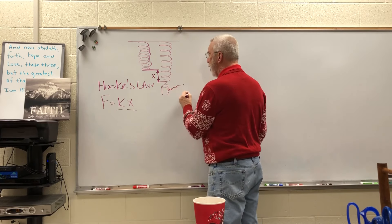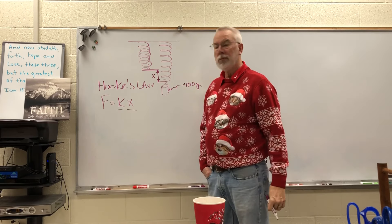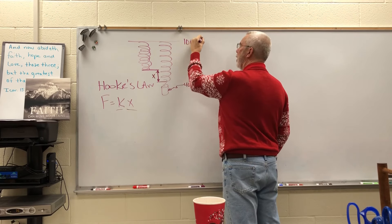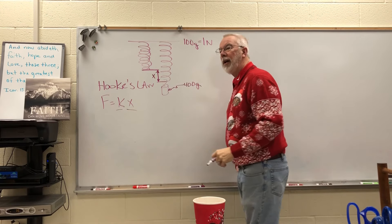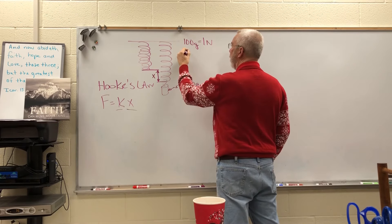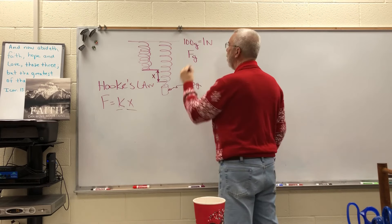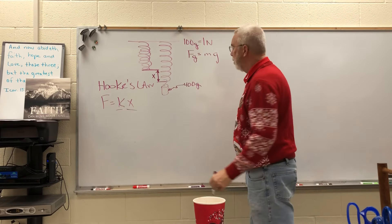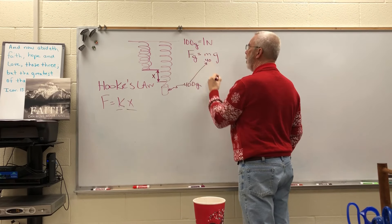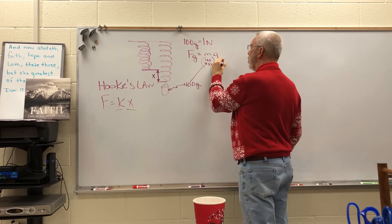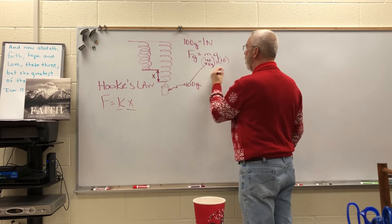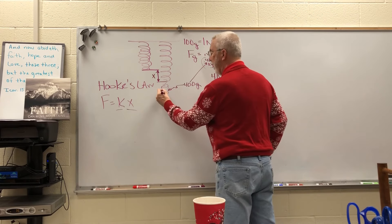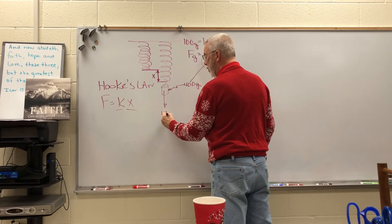If we say that this weight is 400 grams, one of the conversions we use is that every 100 grams equals one newton. But we also have that F of G — weight equals M times G. In order to plug 400 into that equation, you've got to convert it to kilograms, so that value is 0.40 kilograms. G has always been 10 in our class, so that would be four newtons. Either way, 100 divided into 400 is four, so that's a force of four newtons downward.